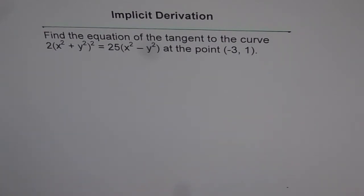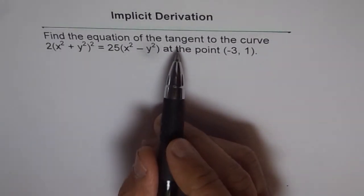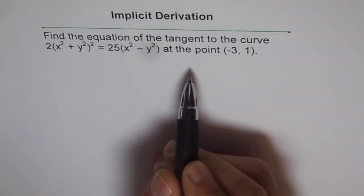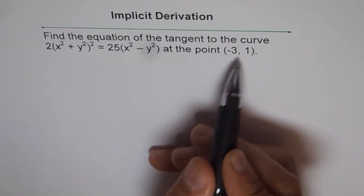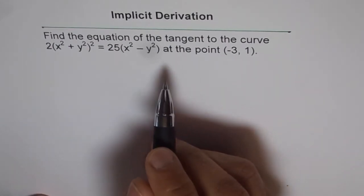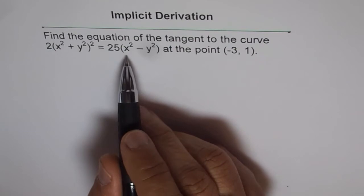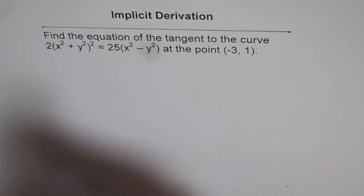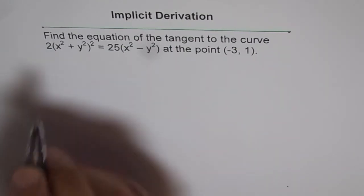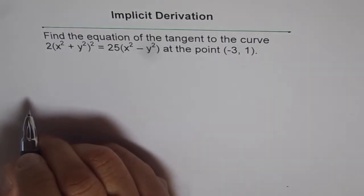To find the equation of the tangent line, first we need to find the slope at this point, then we can use slope-intercept form. To find slope, we need to do implicit differentiation. Let's start by taking the derivative on both sides with respect to x.